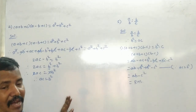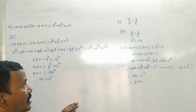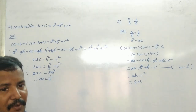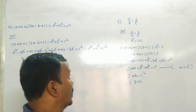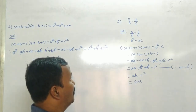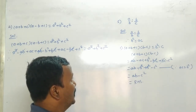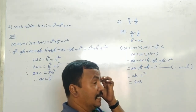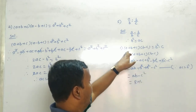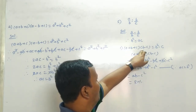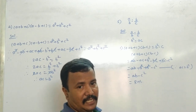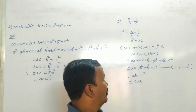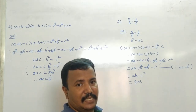Next, question number 5 में क्या बताया है? A upon B is equal to B upon C - already दिया है। Three numbers are in continued proportion। इसलिए B square is equal to AC। अब यहाँ पर क्या prove करना है? A plus B plus C into B minus C is equal to AB minus C square। यही prove करना है हम लोगों को।